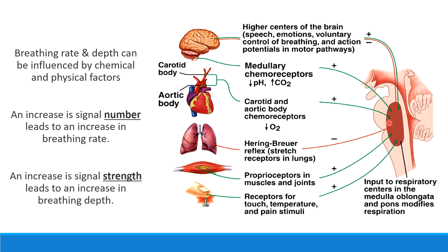We might also see increases in rate and depth of breathing based on proprioceptors. Proprioceptors are stretch detectors — if they detect that muscles and joints are getting stretched from use, that signals the brain to increase respiratory rate because we are exercising and need more oxygen. When we experience painful stimuli — touching something sharp or hot — we have that gasp of air. That comes from somatic receptors throughout the body telling the medullary rhythmicity center to cause a sudden gasp. We do also have feedback that would slow down the respiratory rate or depth.